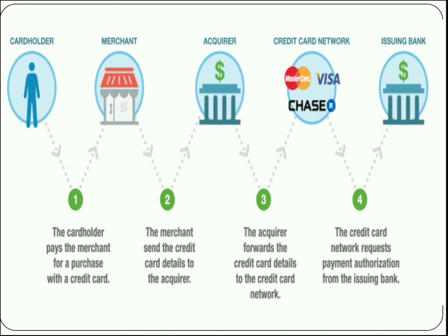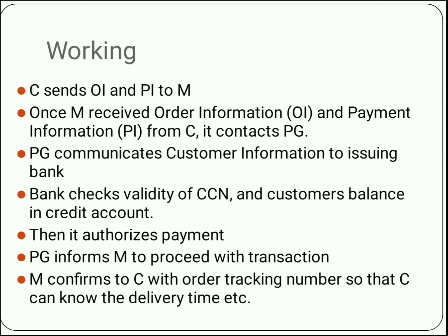As an initial step, the customer sends two messages: one is order information (OI) and the other is payment information (PI). These are sent to the merchant. The order information is for the merchant, but the merchant cannot see the payment information — it is for the bank. So the merchant will forward it to the acquirer bank, and then the payment gateway communicates the customer information to the issuing bank.